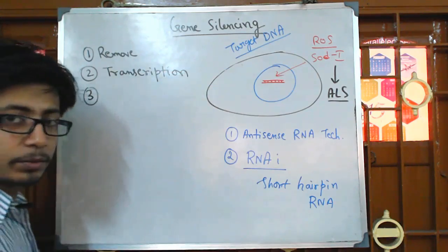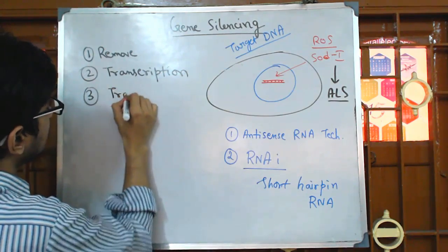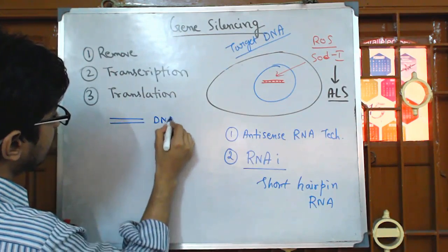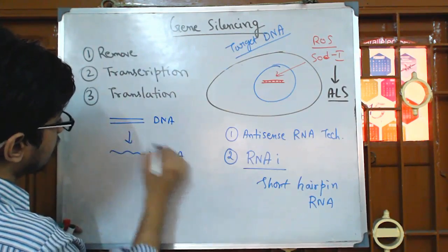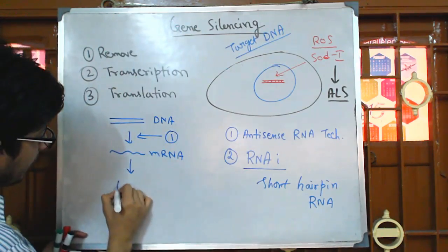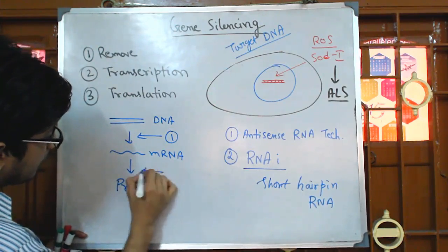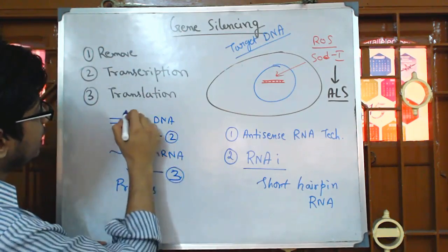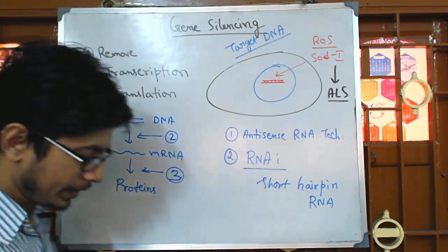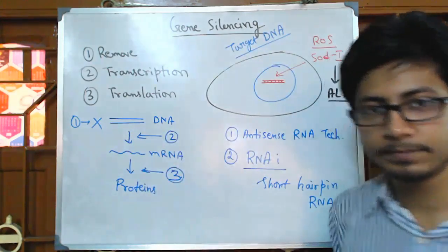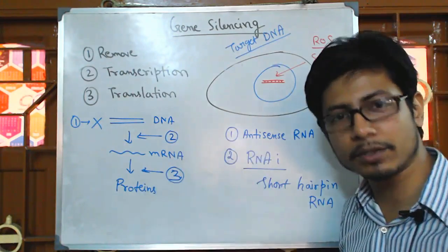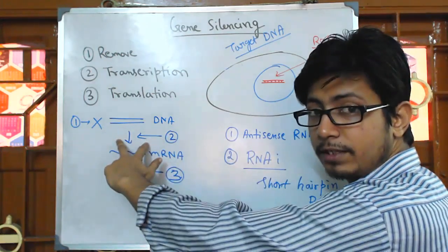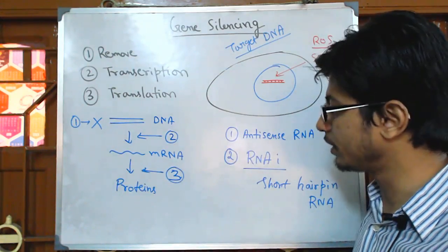The second approach is degrading the regulation of gene expression at the transcription level. The third type of regulation is prevention of expression at the translation level. The central dogma of biology states that DNA will make mRNA — this is the first level where we can prevent. Then mRNA will make proteins — this is the second level.